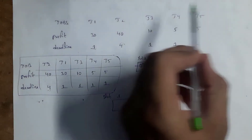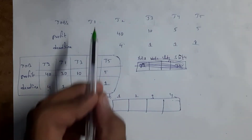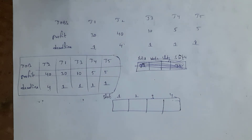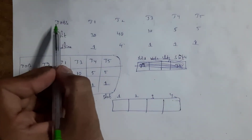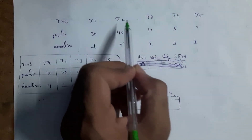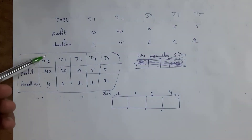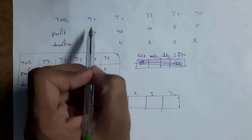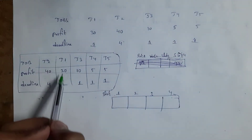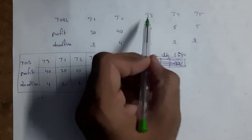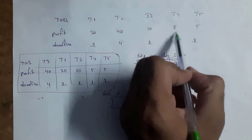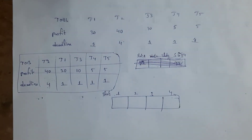This is another example with five jobs: J1, J2, J3, J4, and J5. In Step 1, we arrange the table in decreasing order of profit. J2 has the highest profit, so it comes first. After J2 comes J1 with profit 30, then J3, then J4 with profit 5, and finally J5.